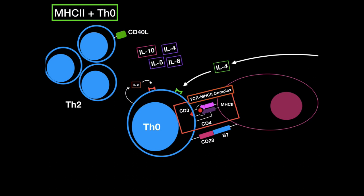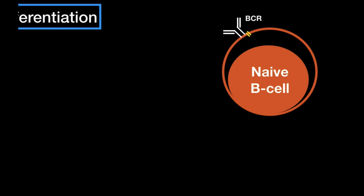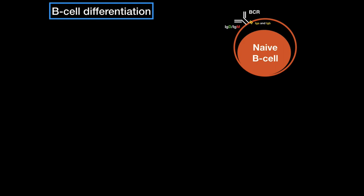B cells have what is called B cell receptors on the surface, composed of either IgD or IgM antibodies, which are membrane-bound, and a signal transducer — a heterodimer called Igα and Igβ. Those transmit the signal to the nucleus when the IgD or IgM binds to something. This B cell is located in the secondary lymphoid organs.